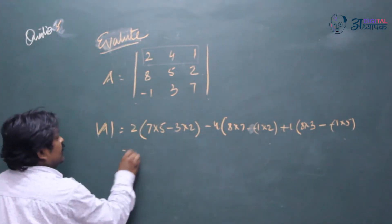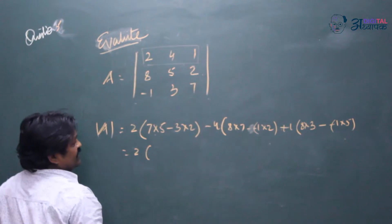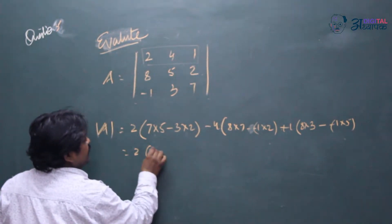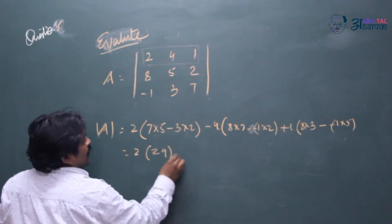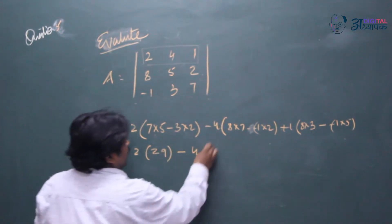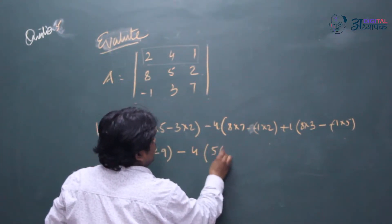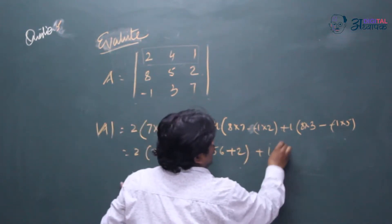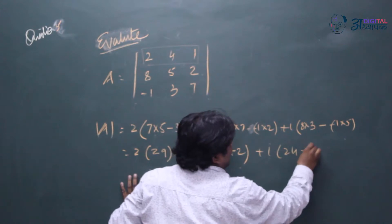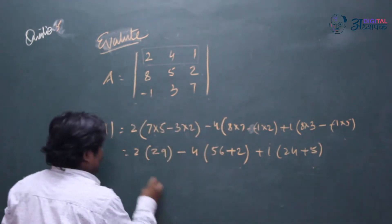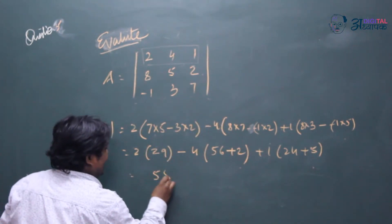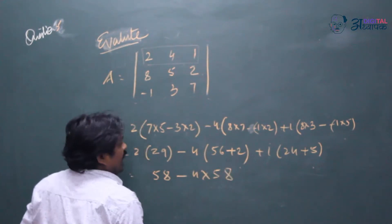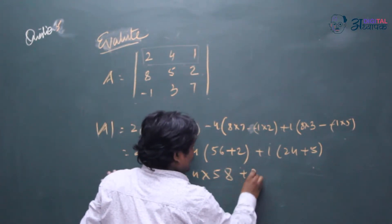So what we get, 35 minus 6, so 35 minus 6 will be 29. Minus 4 and this will be 7 into 56 and plus 2, and then plus 1, 24 plus 5. So what we get this is 58 minus 4 into 58 and then plus 29.